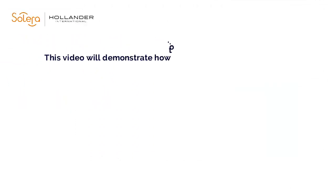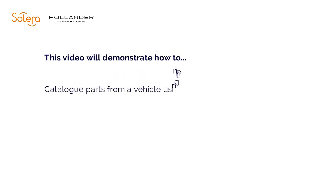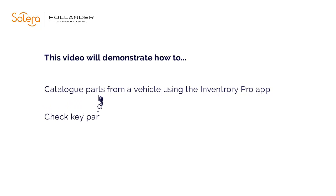This short video will show you how to catalogue and list parts from a vehicle using the Inventory Pro application. We will also demonstrate how to check key stock and sales data from your Pinnacle system and PINNET to assist in making inventory and pricing decisions.